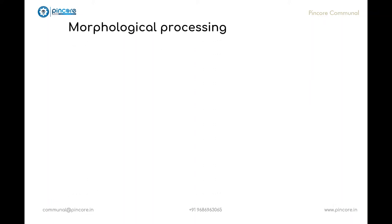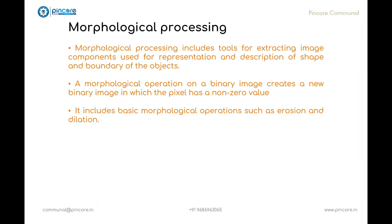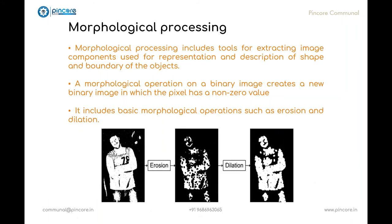Now let's move to the next technique of digital image processing, that is morphological processing. It includes tools for extracting image components that are useful in the representation and description of shape and boundary of the object. It's a collection of non-linear operations related to the shape or morphology of features in an image. A morphological operation on a binary image will create a new binary image in which the pixel has a non-zero value only if the test is successful at that location in the input image. It includes basic morphological operations such as erosion and dilation. It is mainly used in automated inspection application. As said before, from this step the output will be image attributes and not the images.